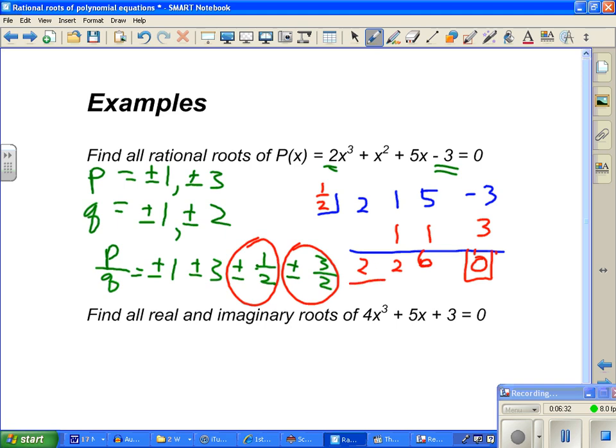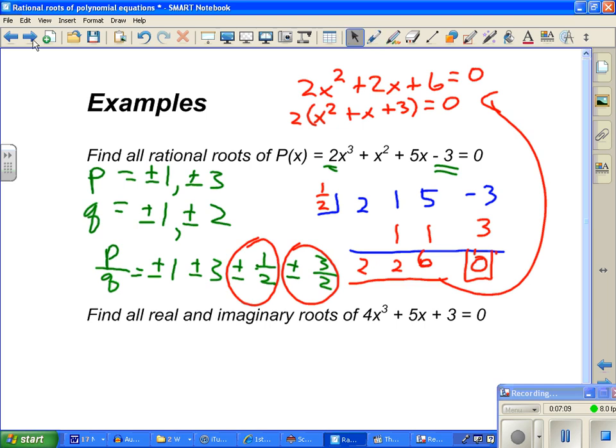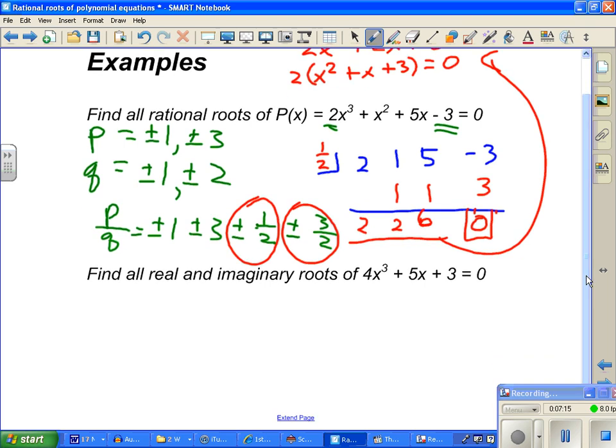Now this leaves me with a resulting quadratic. 2x squared plus 2x plus 6. Now we go ahead and solve that. That equals 0. I can factor out a 2 for sure. So that leaves me with x squared plus x plus 3. That equals 0. And that quadratic will not factor. So we run it through the quadratic formula or complete the square. Quadratic formula would probably be easiest.